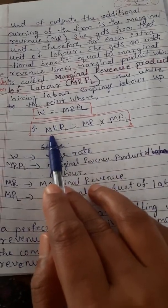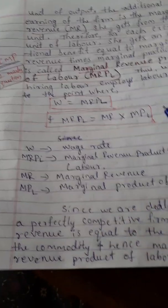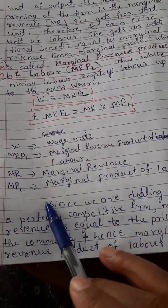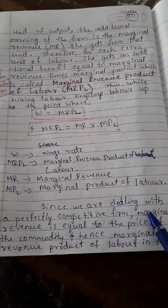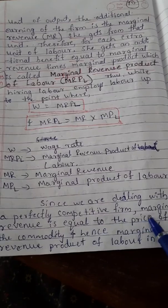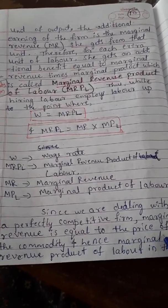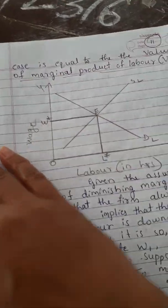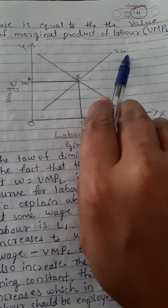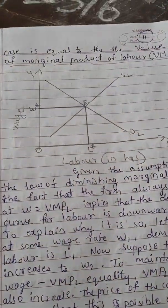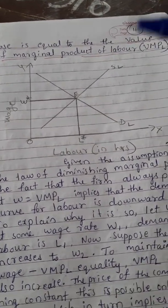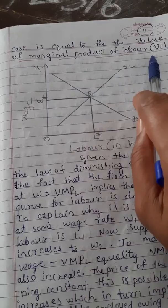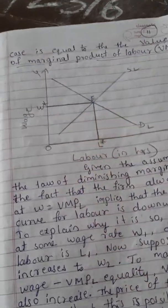MPL means Marginal Product of Labor. Since we are dealing with a perfectly competitive firm, marginal revenue is equal to the price of the commodity. Hence, the Marginal Revenue Product of Labor in this case is equal to the Value of Marginal Product of Labor. The equilibrium condition is: W equals VMPL, where VMPL is the value of the marginal product of labor.